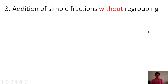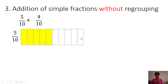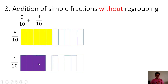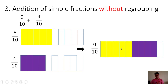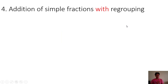Example number 3: addition of simple fractions without regrouping. We have 5/10 plus 4/10. We have 5/10 and we have 4/10. Combining the shaded parts, we have 5 yellow shaded parts and 4 purple shaded parts — we have 9 out of 10 shaded parts. Since we cannot reduce this into lowest terms, then it is the final answer. Therefore, 5/10 plus 4/10 is equal to 9/10.